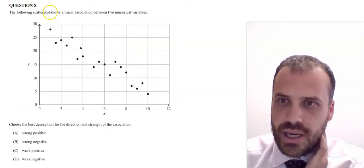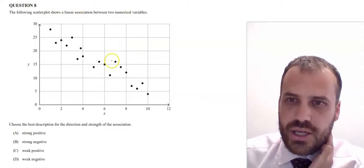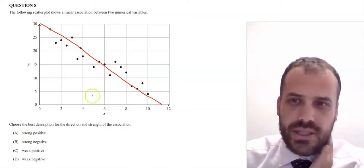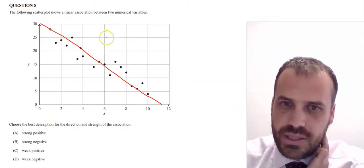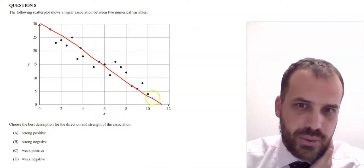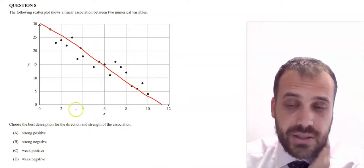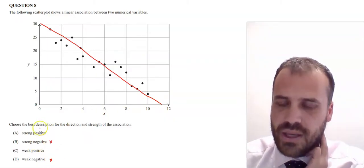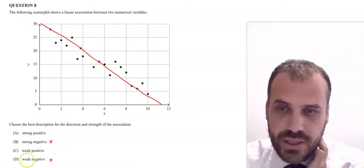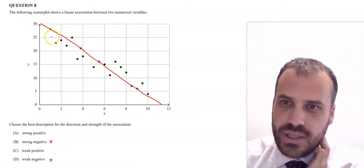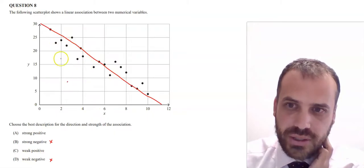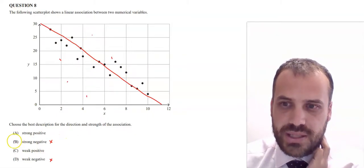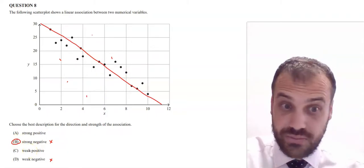Question eight: a scatter plot showing a linear association — we can draw a straight line through it. The line slopes downwards, so it's a negative association, meaning the answer must be B or D. The dots are pretty close to the line — not scattered widely — so we say it's a strong negative association. That's our answer.